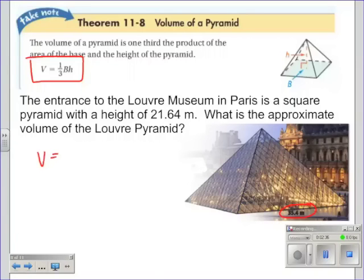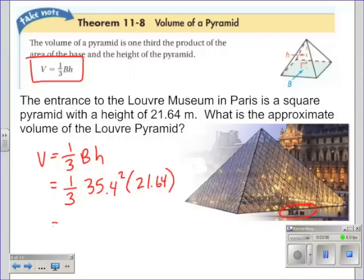We'll need to know that, so we always write down our formula first. Now to find the area of the base since it's a square we could really just do length times width, well the length and the width are the same so I can write that as 35.4 squared and then I multiply that by my height which I'm given in the problem which is 21.64. So now I'll just multiply that out to get my final volume and my answer is 9039.5 meters cubed.